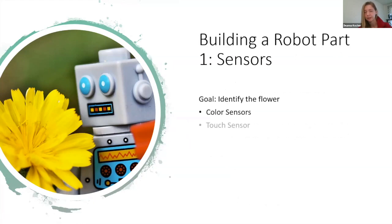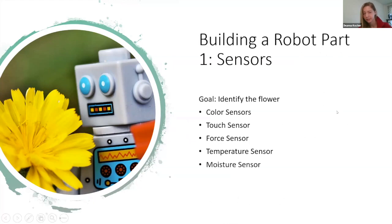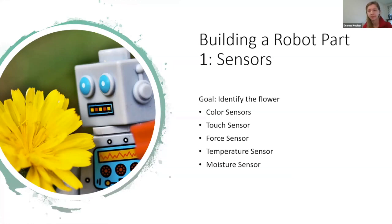There are a lot of different types of sensors — color sensors, touch sensors, force sensors, temperature sensors, moisture sensors. These are just some common examples; there are many more. What we want to think about is: if we're trying to identify a flower, which one of these sensors, or which combination, is going to be the most useful?